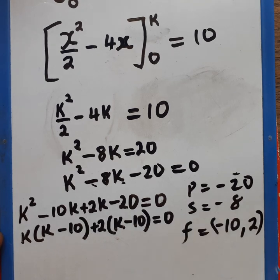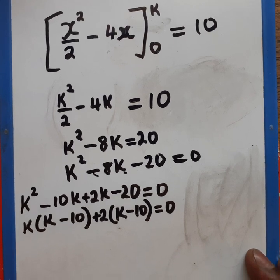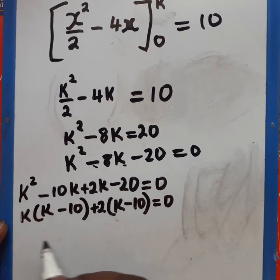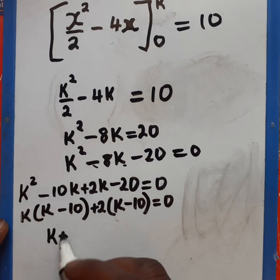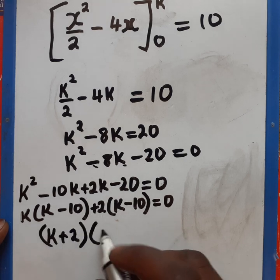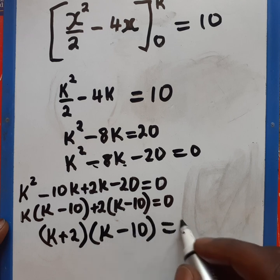So now at this point, I'm sure you know that we need to say k plus 2 open brackets, then we have k minus 10 equals 0.